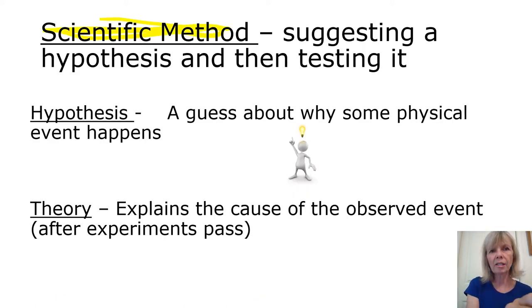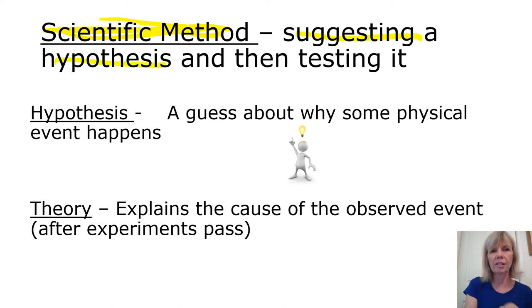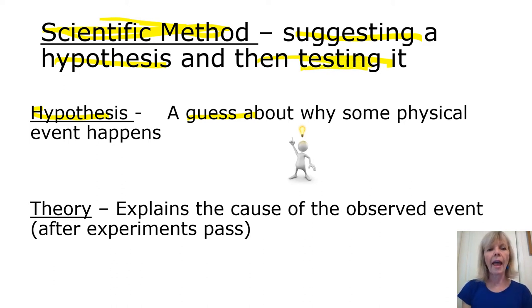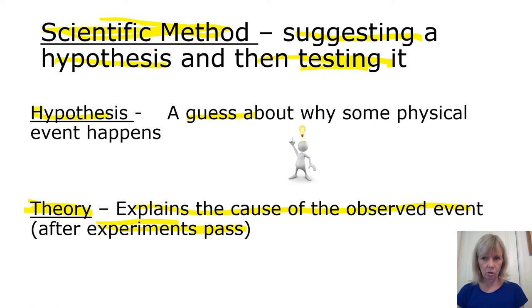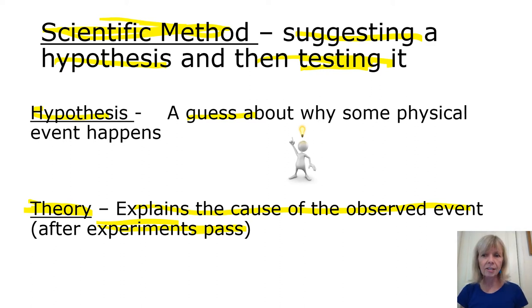The scientific method is a process to help us determine why certain events in our life happen. You suggest a hypothesis — a guess about why an event occurs — and then test it by running experiments to see whether your guess is true or not. After experiments, you can come up with a theory to explain the cause of the event. The scientific method is used in chemistry and other fields; for example, detectives use it in criminal investigations — they come up with a hypothesis of what happened and do experiments to test it before concluding.